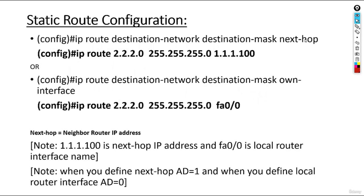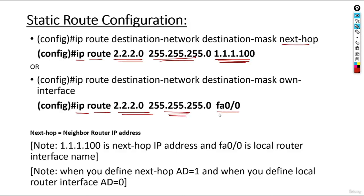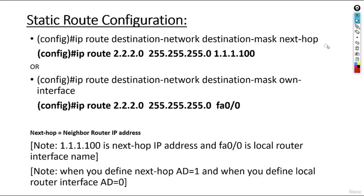To configure a static route, there are two methods. Method one: ip route [destination network] [destination subnet mask] [next-hop IP address] — the next-hop IP is your neighbor's IP address, not your own. Method two: ip route [destination network] [destination mask] [your own exit interface]. Industry prefers Method 1 using the next-hop address. With Method 1, the administrative distance is 1; with Method 2 using the exit interface, the administrative distance becomes 0.